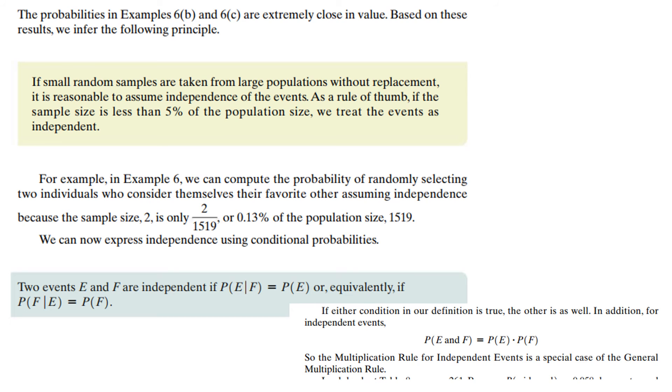And here is it more formally. If a small random sample is taken from large but finite populations without replacement, it is reasonable to assume independence of the events. The rule of thumb is, if the sample size is less than 5% of the population size, you can treat the events as independent. So in the example that we were studying, the sample size was 2. So 2 out of this is only 0.13%, which is way less than 5%. So you can assume independence.